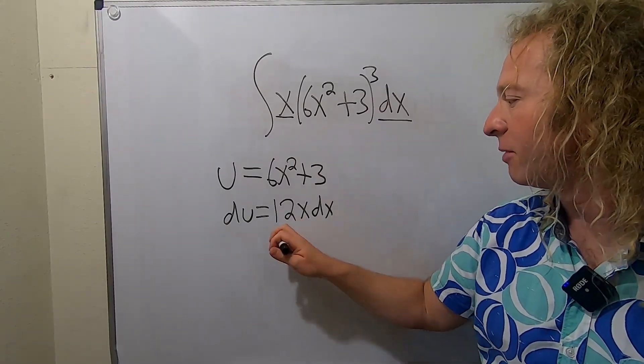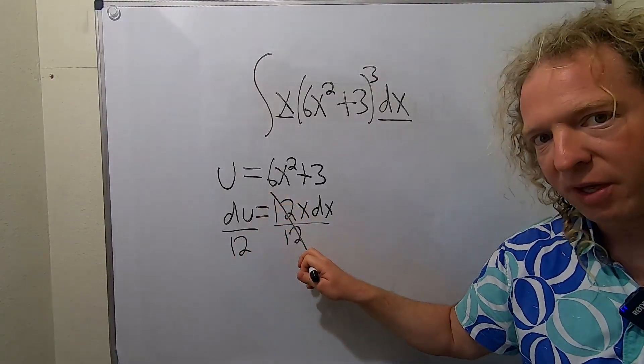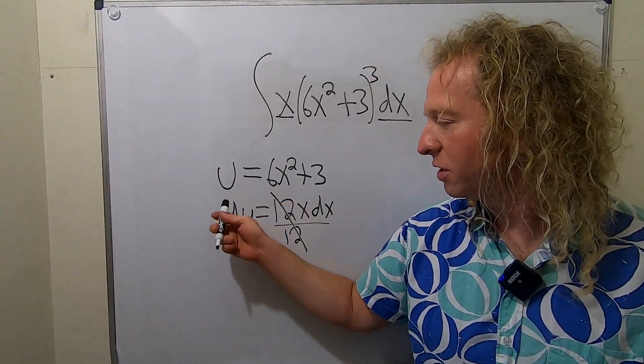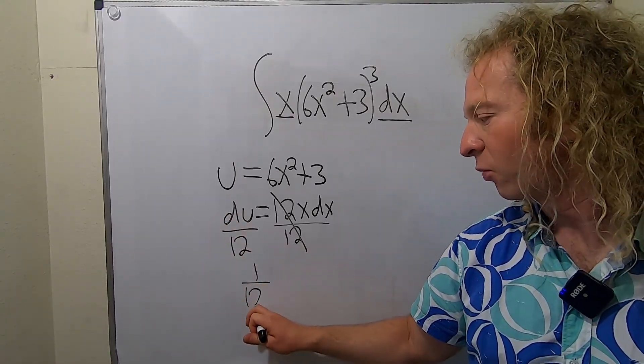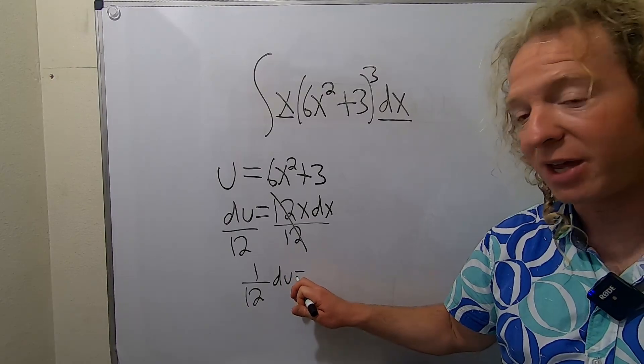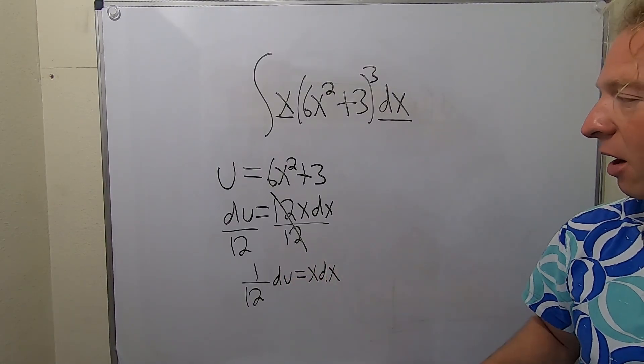So we'll divide both sides by 12. Divide by 12, these cancel. Now watch how I'm going to write this: instead of du over 12, I'm going to pull out the 1/12 and write it like this: 1/12 du. There's a reason for that, you'll see in a minute. And this is x dx.